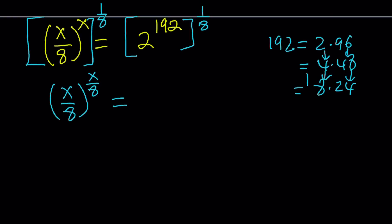So 192 can be written as 8 times 24, and that's going to be very helpful. If I write 192 replaced with 8 times 24, and I multiply by 1 over 8, then the 8 and 1 over 8 cancel out.